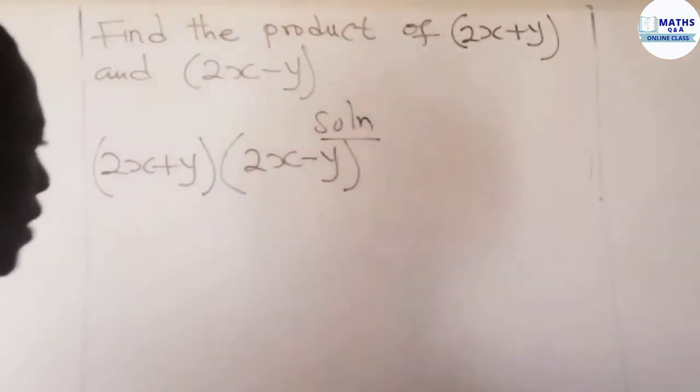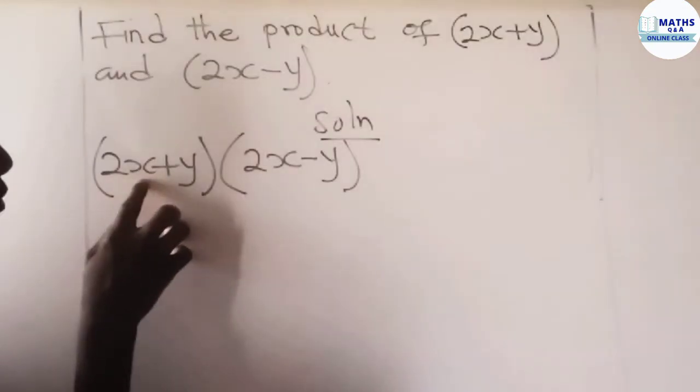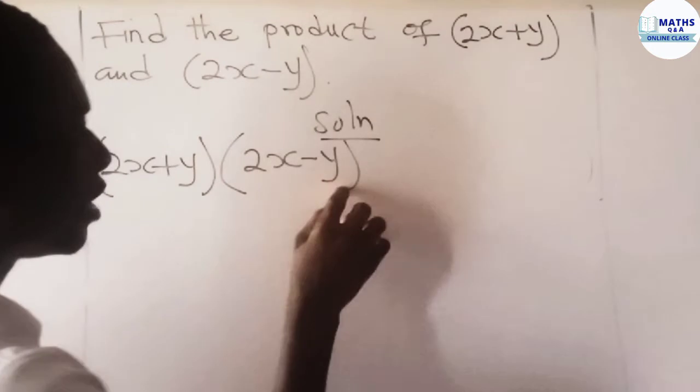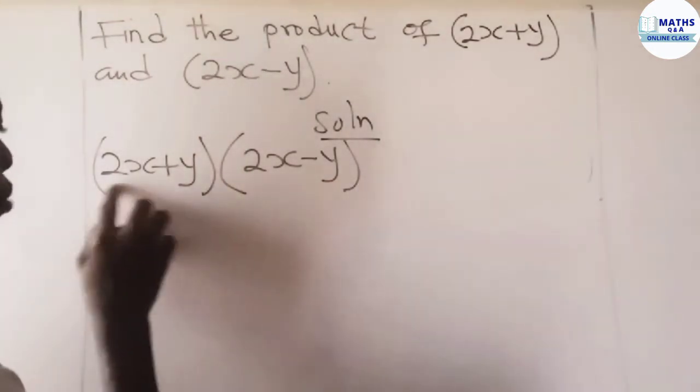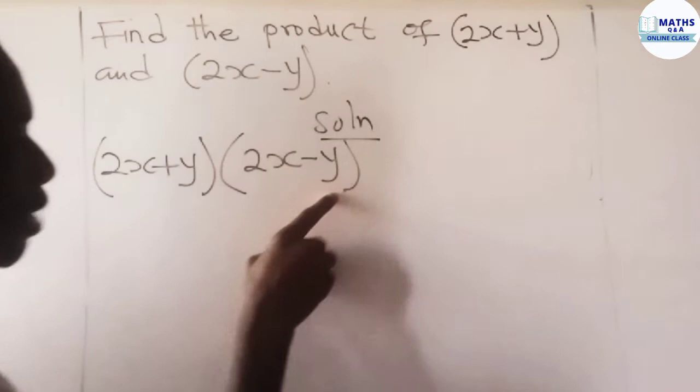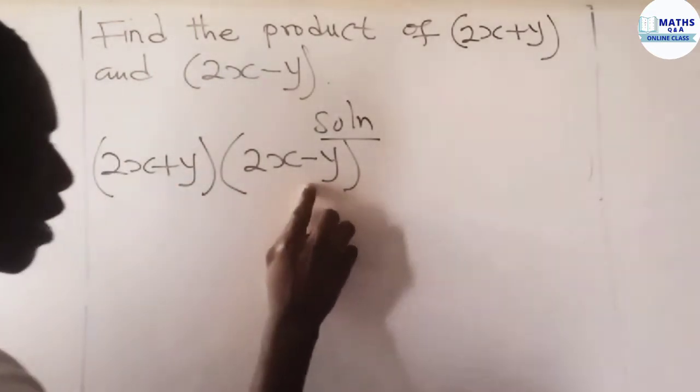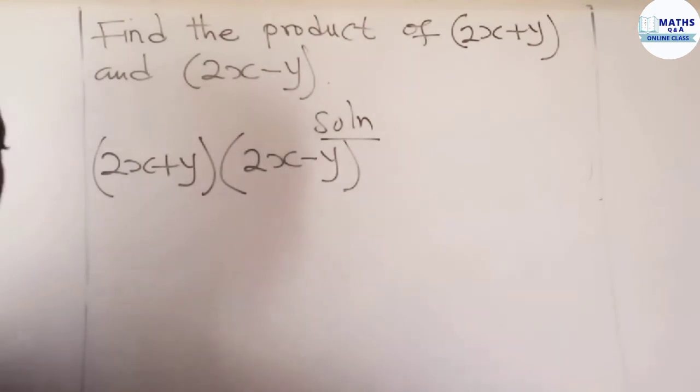What this means is that if you take one item from this bracket, you multiply it by each of the items in this bracket. So if you take 2x, you multiply it by 2x minus y. You take y, you multiply it by 2x minus y. Let's do that by expansion.